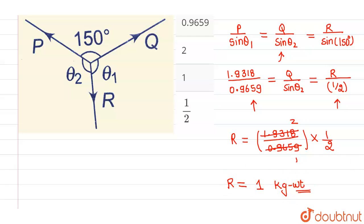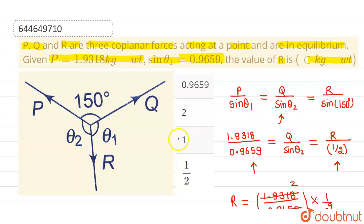1 kg weight is the value of R. Now if you tick from these options, option 3 is correct and rest all options are incorrect. I hope you understood. Thank you.